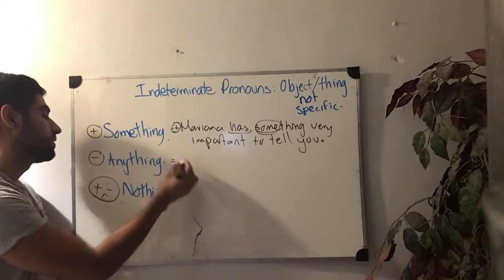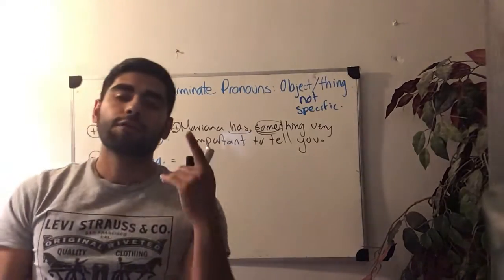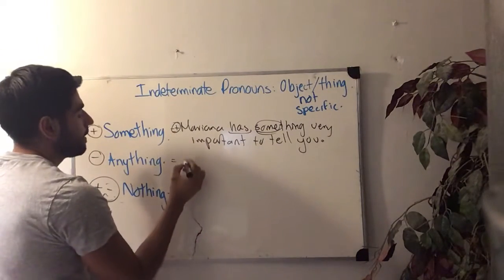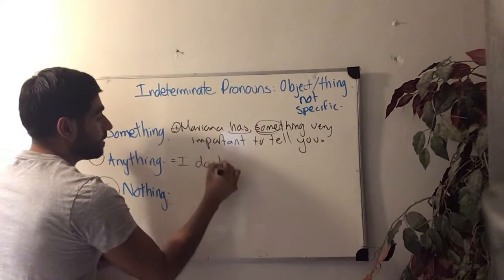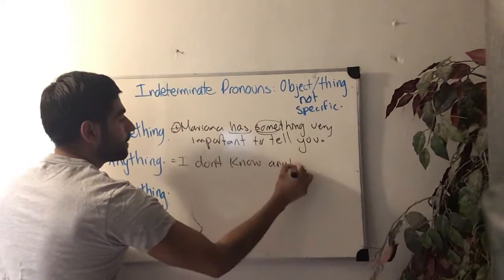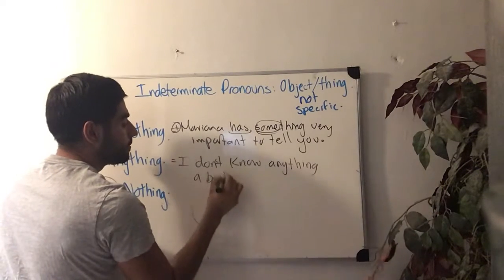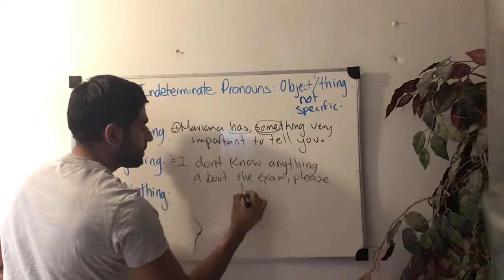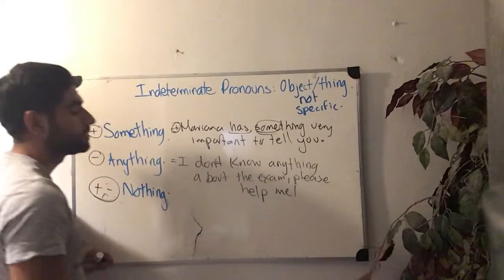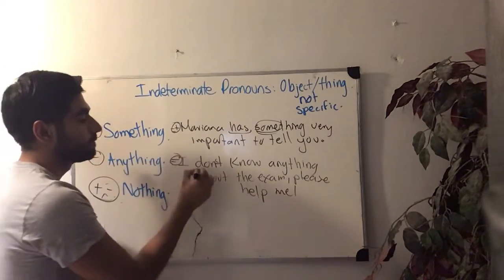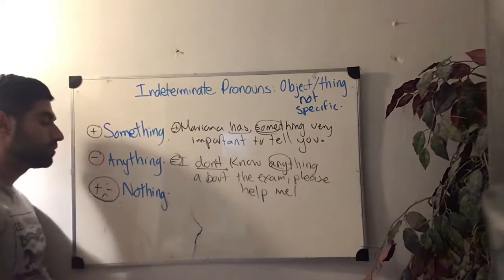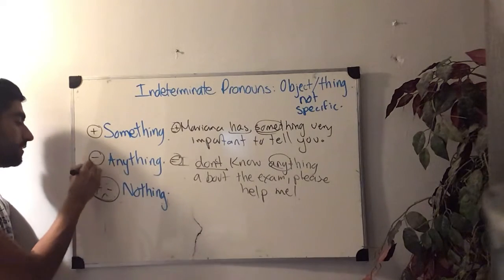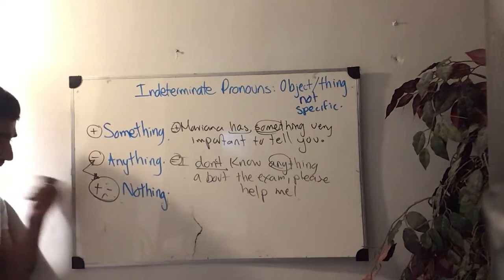Let's continue with the second one — anything. If you remember, anything is used in negative form. So that one we are saying: I don't know anything about the exam. As you guys can see, this one is a negative form — don't — and we are using anything. So you don't know any of the answers of the exam. And as you remember, these two are basically the same word, but we use them in a different way.